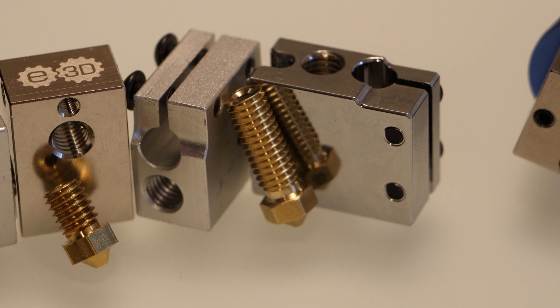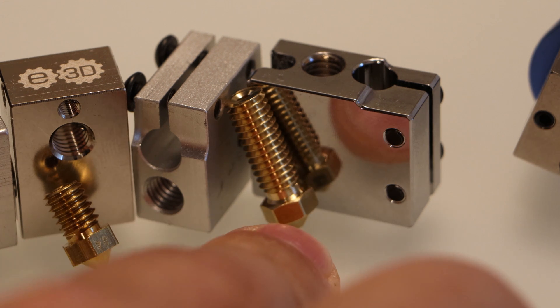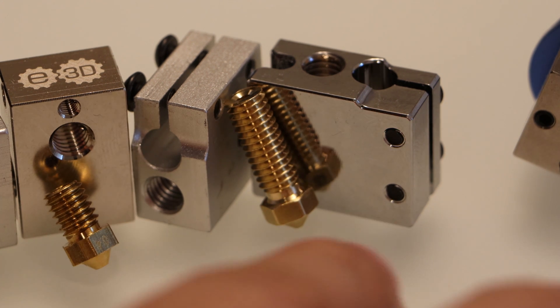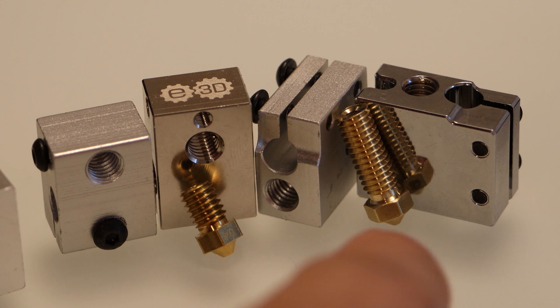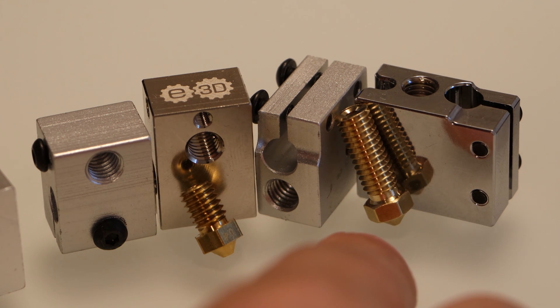The melt zone on this thing is about twice as long, and it does a good job with nozzles that are larger, so 0.6 millimeters and up. My recommendation is to go with a standard heater block if you're planning on printing with a 0.4 millimeter nozzle or below, and to go with a volcano style heater block if you're planning on printing with a 0.6 millimeter or above.